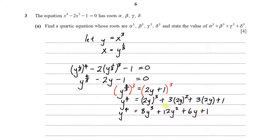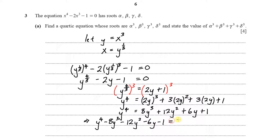Taking everything to the left side, we get y⁴ minus 8y³ minus 12y² minus 6y minus 1 equals 0. This is the quartic equation with roots alpha cubed, beta cubed, gamma cubed, and delta cubed.